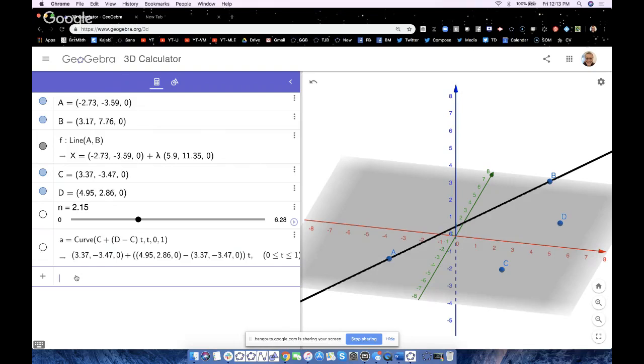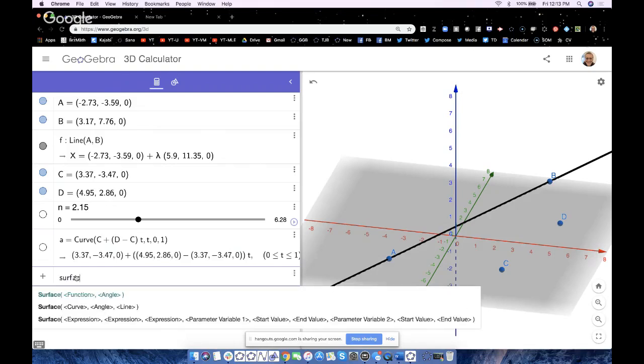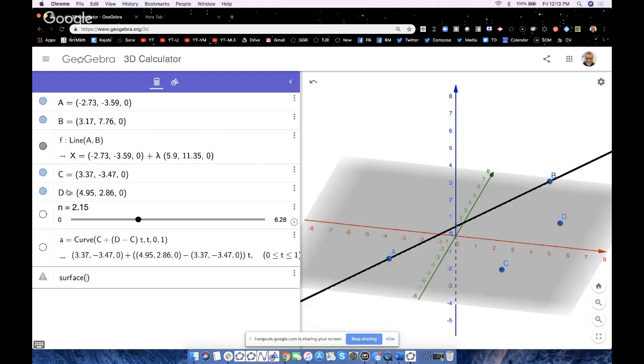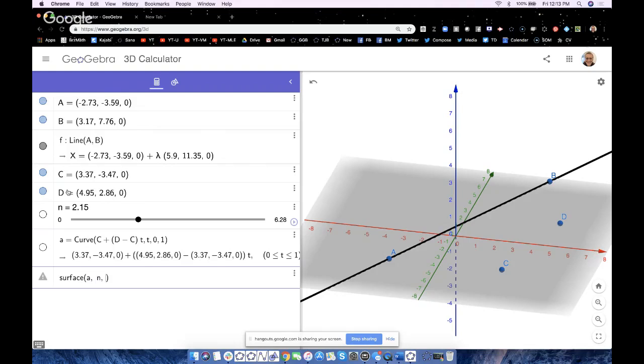Now, why did I use the curve command? Because now of the three surface commands that exist, I'm going to use the second one right here: surface, curve, angle, line. What's the curve called? A. The angle is called n. What's the name of my line? F. So check it out: surface, curve, angle, line. Boom, there you go baby, right there.